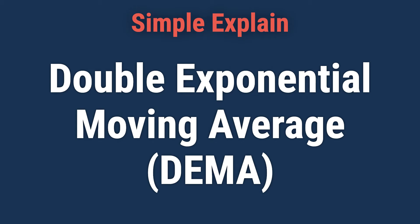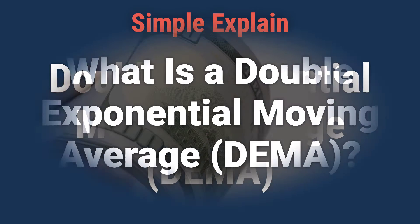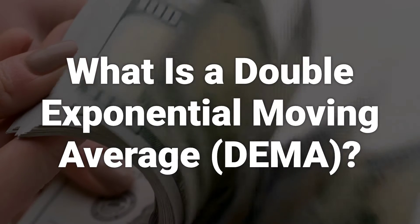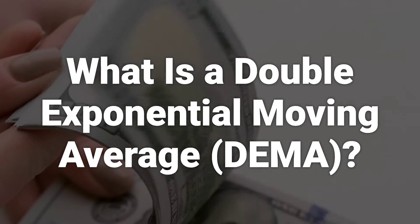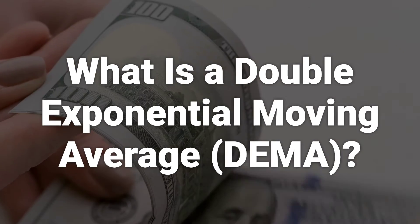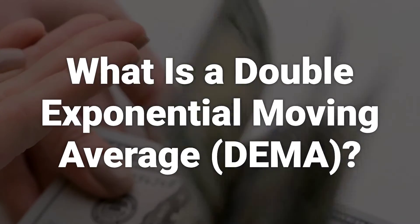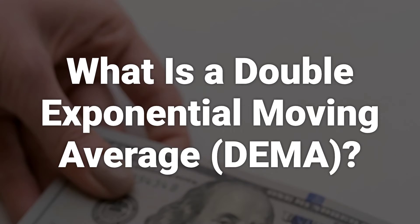Today, we will talk about the Double Exponential Moving Average, DEMA, a variation on a technical indicator used to identify a potential uptrend or downtrend in the price of a stock or other asset. The Double Exponential Moving Average is a technical indicator that aims to reduce lag in the results produced by a traditional moving average.